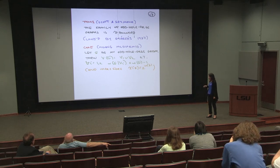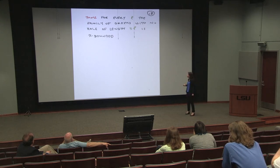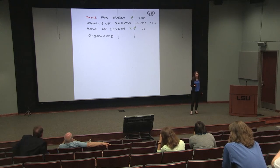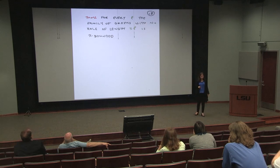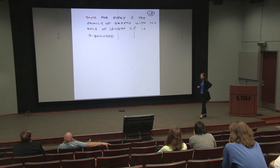The second theorem — that if you forbid all long holes, the family you get is chi-bounded — is also proved by finding the long hole in graphs of large chromatic number without understanding the structure too much. The bound here is also a double exponential and depends on L. Now I want to show you some ideas from the proofs — I won't actually prove any of the statements, but I'll show you some ideas that come up.